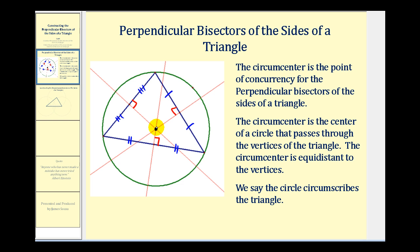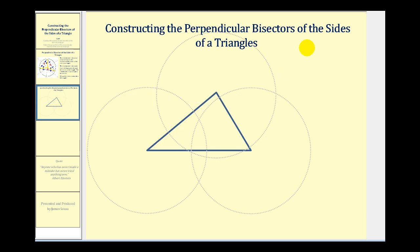It follows that the circumcenter is equidistant to the vertices. If we drew a segment from the circumcenter to each vertex, notice each segment would be the radius of the green circle, and we say that the green circle circumscribes the triangle. Now let's look at the construction. We're going to need a compass and a straight edge, and for this entire construction we're going to leave the radius of the compass the same.